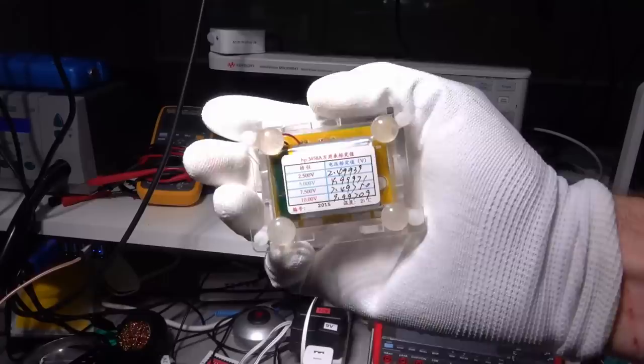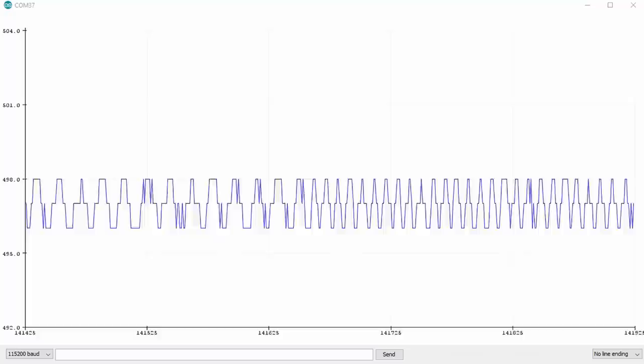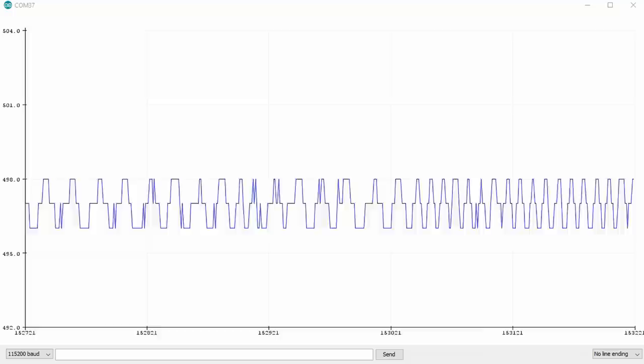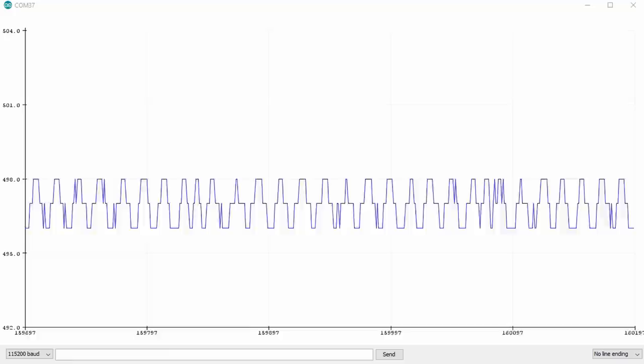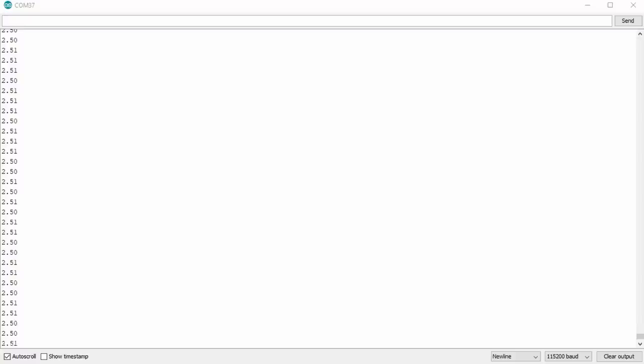Let's now check the different ADCs out. I have here an exact voltage reference, which can produce exactly 2.5 and 5 volts. Let's start with the Arduino Uno. At 2.5 volts, it displays 496 to 498, which is plus minus 1 LSP. But is this correct? We map the values with this formula and get mostly 2.5 or 2.51 volts. Not bad.